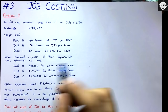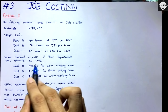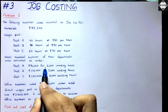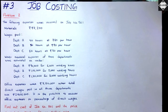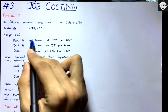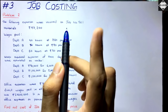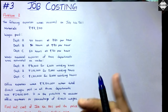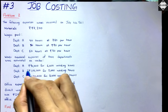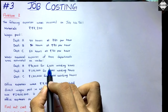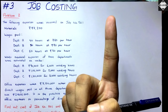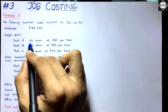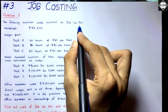Then we have works overhead expenses of these departments estimated as follows. Department A: ₹90,000 for 6,000 working hours. In this job, department A only takes 40 hours. So what we have to do — we've seen this in the previous video — is take ₹90,000 divided by 6,000 to get the rate per working hour, then multiply that rate by the 40 actual labor hours taken in job number 501.